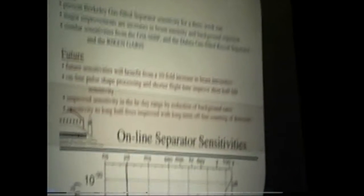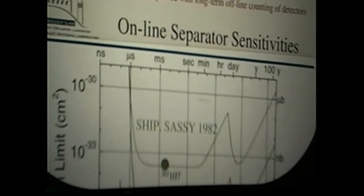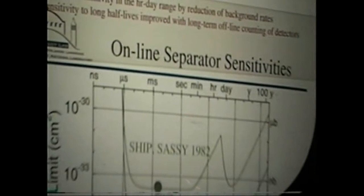As you get into the half-life range between milliseconds and minutes, this is a flat part of the curve, limited by production rates, cross sections, and efficiencies of the separator. As you get to longer lifetimes, there's a reduction in the sensitivity. Anything above the curve is an experiment you can do.